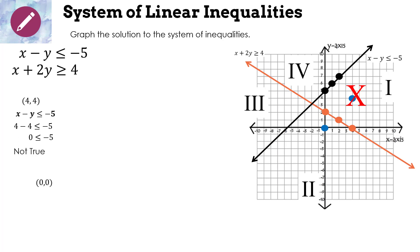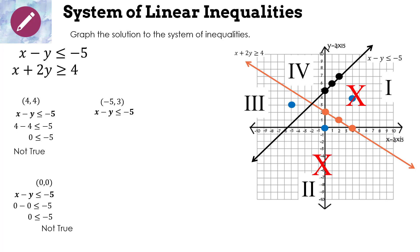Test region 2 with (0, 0). First inequality: 0 − 0 = 0 — is 0 ≤ −5? Not true, so region 2 is not the solution. Test region 3 with (−5, 3). First inequality: −5 − 3 = −8 — is −8 ≤ −5? That's true.